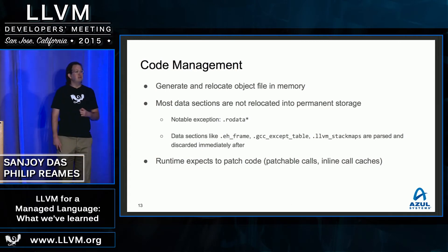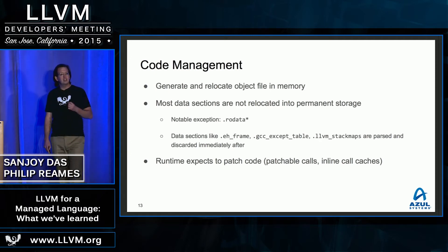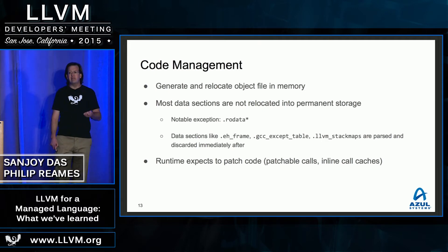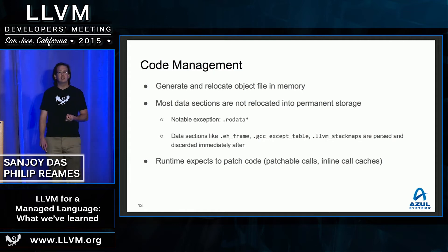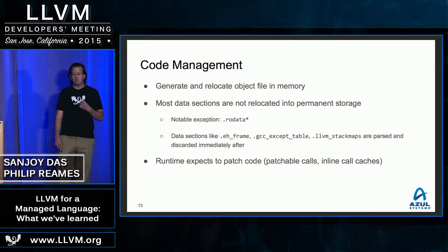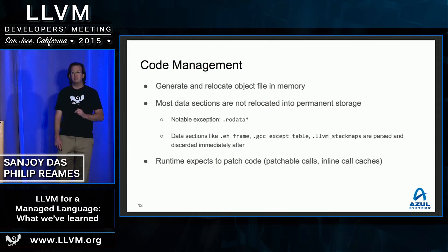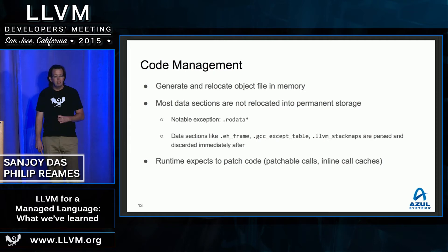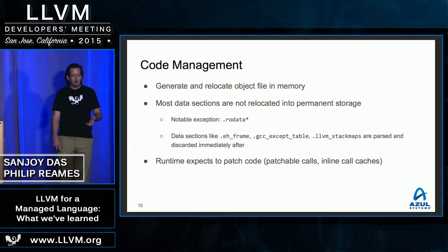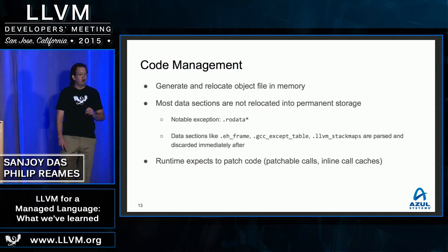Once we get that object file in memory, we split it apart: we take the text section and relocate that into our own memory managed for execution, and then we take most of the data sections, parse them apart, and throw them away. The only exceptions are things like constants that get relocated near the text section in the code cache. This means most of the data sections are just data structures to us — we don't really care about the encoding, the size, or any of those issues. Our runtime does do code patching in various forms, and given the support is fairly mature with patch points, state points, and such, we're not going into those pieces today.